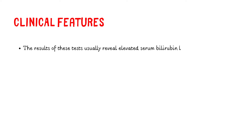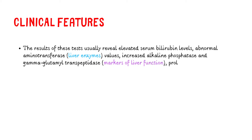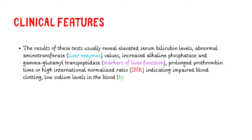In addition to observable clinical signs, laboratory tests play a crucial role in the diagnosis of cirrhosis. Results typically reveal elevated serum bilirubin levels, abnormal aminotransferase liver enzyme values, increased alkaline phosphatase and gamma-glutamyl transpeptidase, prolonged prothrombin time or high international normalized ratio (INR) indicating impaired blood clotting, low sodium levels in the blood (hyponatremia), and decreased platelet count (thrombocytopenia). These laboratory abnormalities help confirm the diagnosis and assess the severity of cirrhosis.